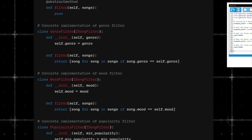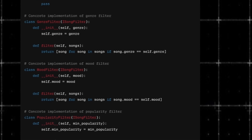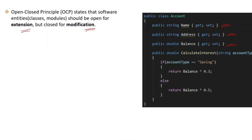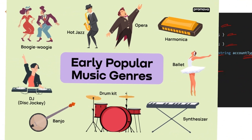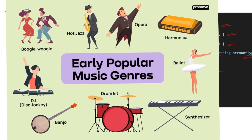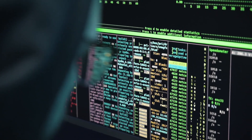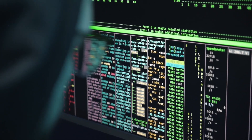This approach is like a Lego set — the original Song Filter class is the base set, which remains unchanged. Each new filter criteria is an additional Lego piece that can be added without altering the original set. This way, the music streaming service can easily expand its filtering capabilities by adding new classes for additional criteria, keeping the system flexible and robust without needing to modify existing code.